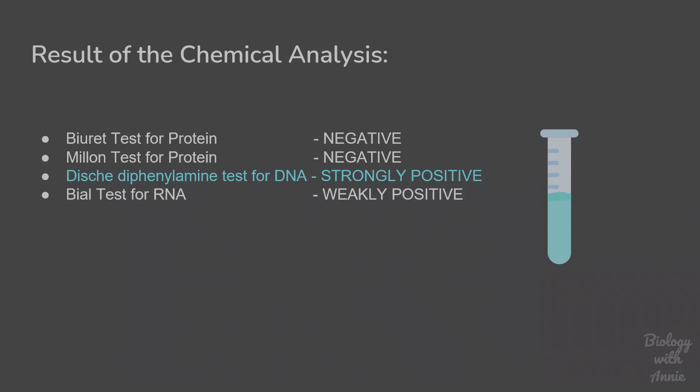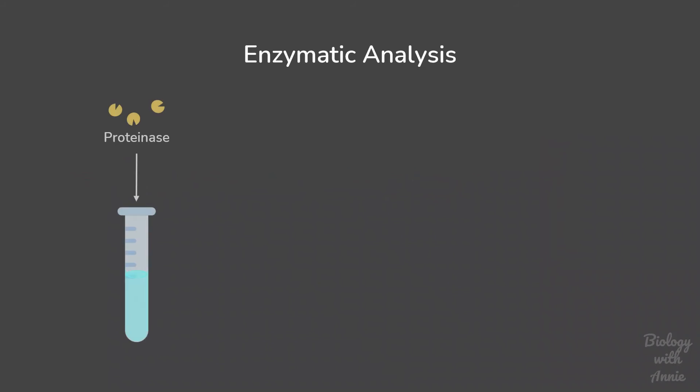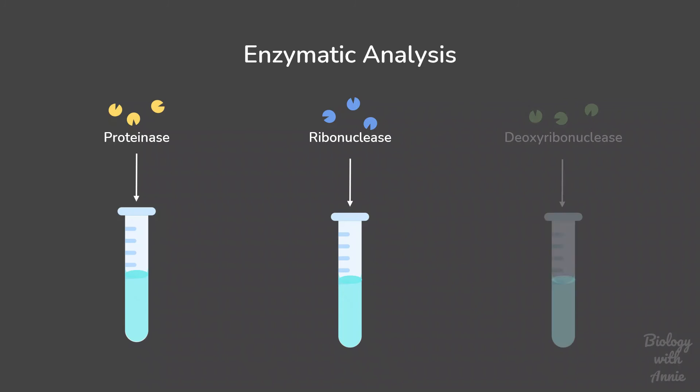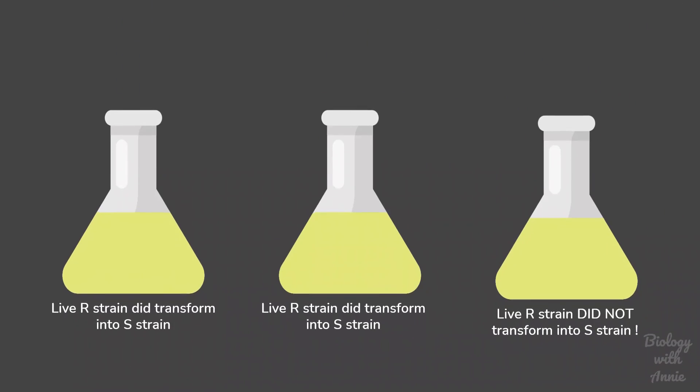They used different enzymes to see which enzyme degraded the transforming principle. Enzymatic degradation of proteins and RNA had no effect on transformation. However, when deoxyribonuclease — an enzyme that can degrade DNA — was added to the crude extract, transformation was no longer possible.